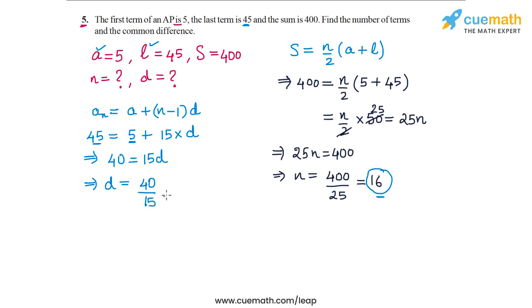And now if we reduce it to the lowest term, dividing by 5, dividing both the numerator and denominator by 5, we get 8 by 3. So D is equal to 8 by 3.